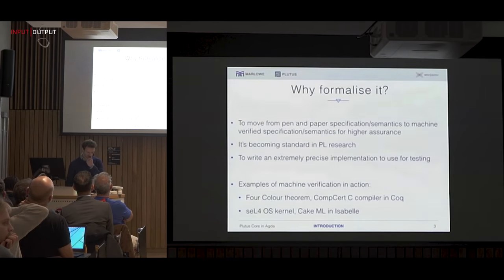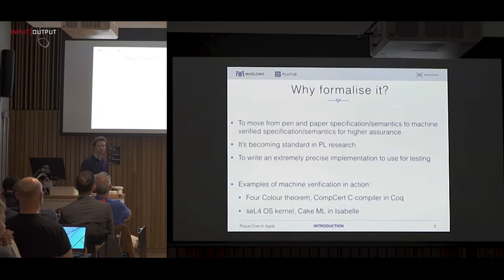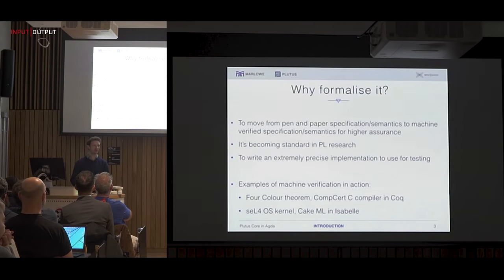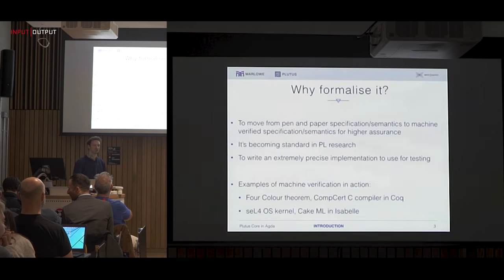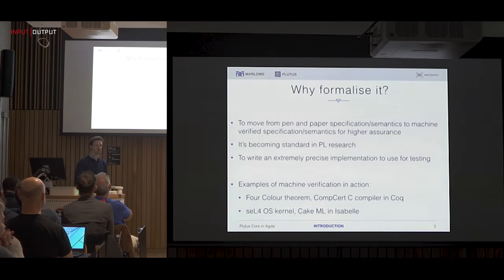You might wonder why should we formalize this? Well, we want to move from pen and paper specifications to having machine-checked specifications and machine-checked proofs, so that we can have higher assurance. Quite often when you have a programming language, if you're lucky you might get the grammar in the appendix at the back of the book.